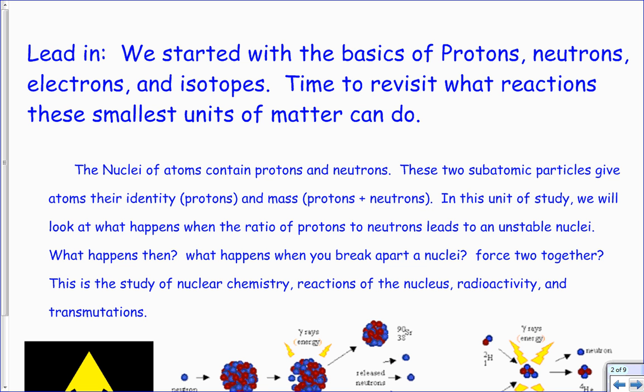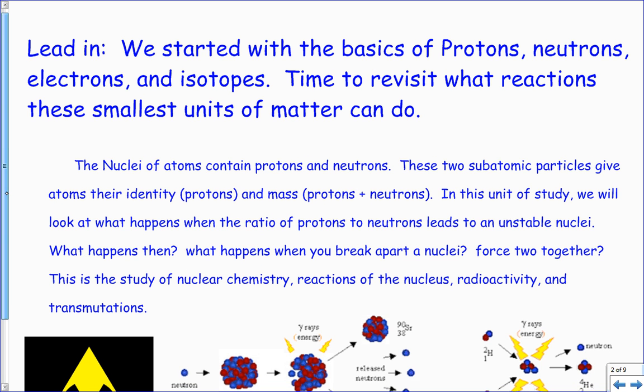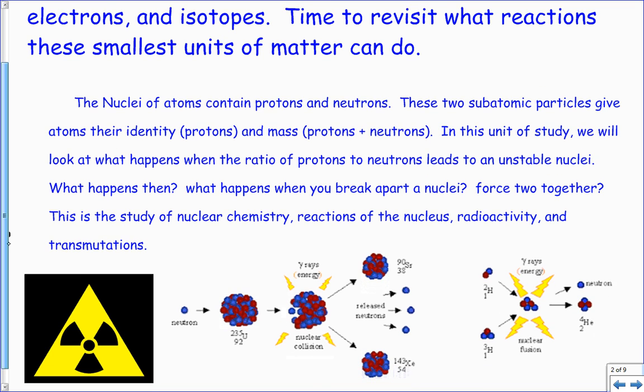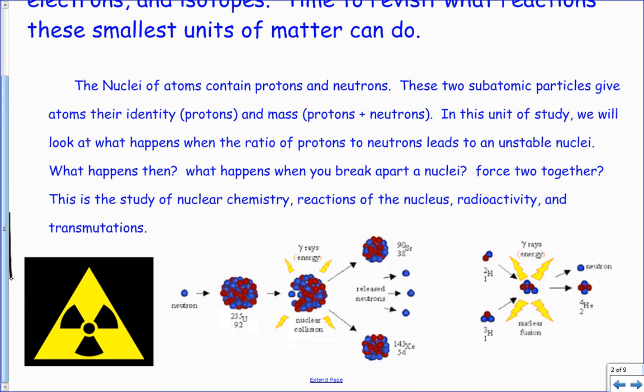When we started the year we dealt with protons, neutrons, and electrons, and we added in isotopes. Remember, same number of protons, different mass - that's what an isotope is. We'll just start that review now. We're going to get back into the nucleus, except this time with nuclear we're going to deal with what happens when we do move these protons and neutrons around and kind of break those laws of physics.